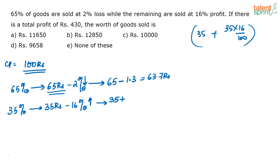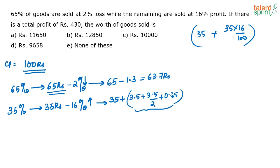10% of 35 is 3.5, 5% of 35 is 1.75, and 1% of 35 is 0.35. So 16% of 35 is 3.5 plus 1.75 plus 0.35, which equals 5.60. So the selling price of these goods is 35 plus 5.60, which is 40.60 rupees.